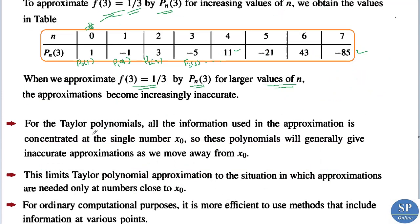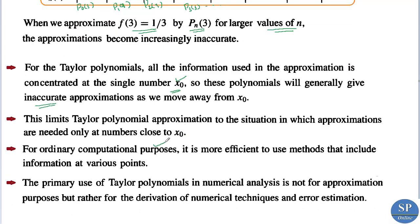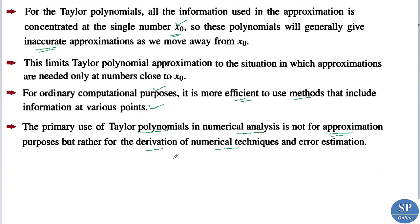For Taylor polynomials, all the information used in the approximation is concentrated at the single point x_0, so these polynomials generally give inaccurate approximations as we move away from x_0. This is a limitation of Taylor approximation. For computational purposes, it is more efficient to use methods that include information at various points. The primary use of Taylor polynomials in numerical analysis is not for approximation but for derivation of numerical techniques and error estimation. We will discuss the Lagrange interpolating polynomial in the next lecture.